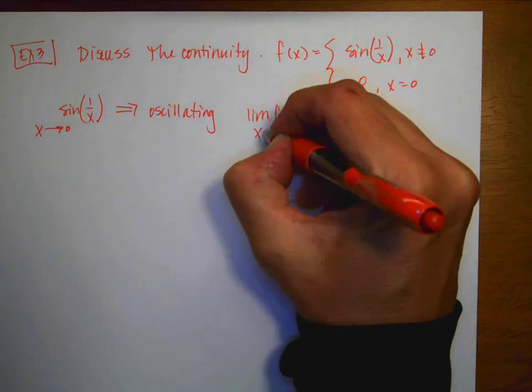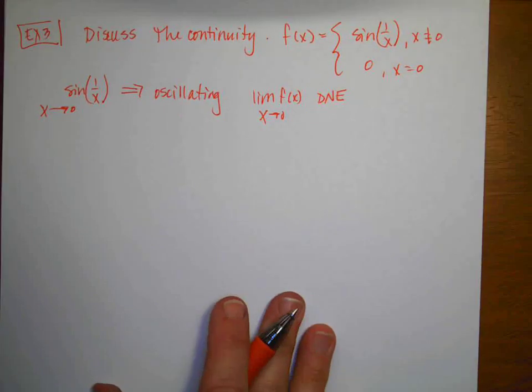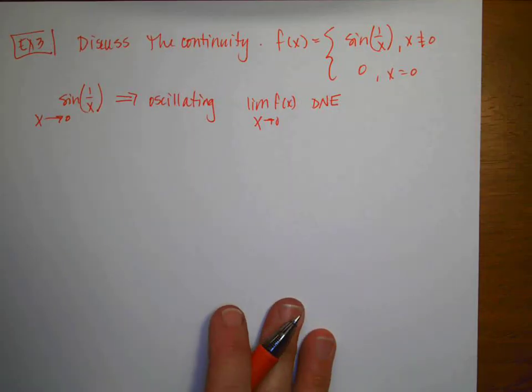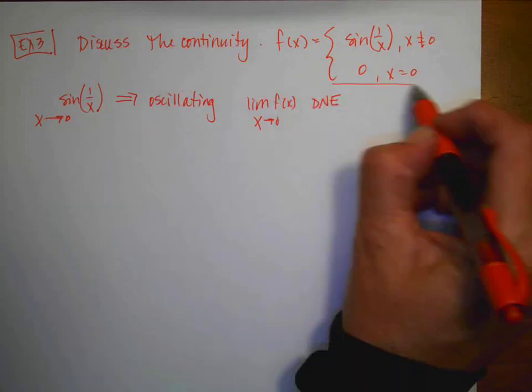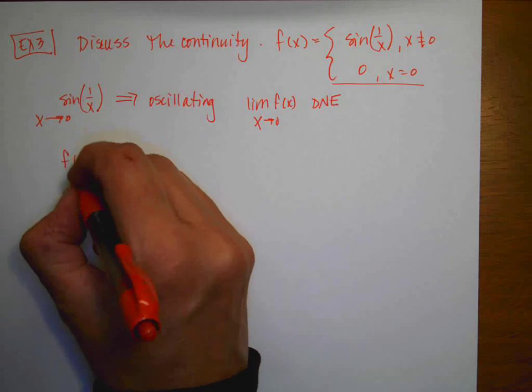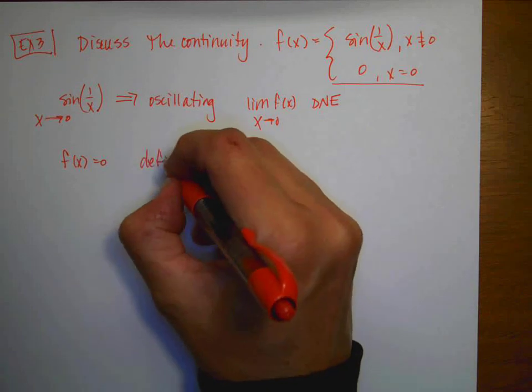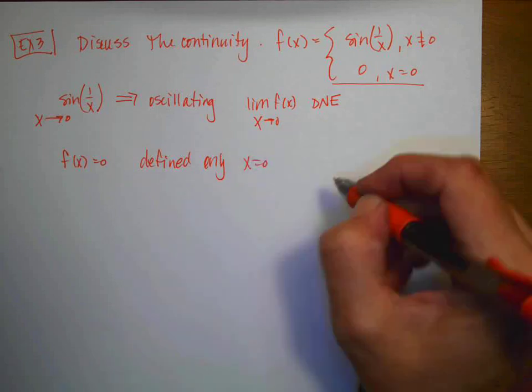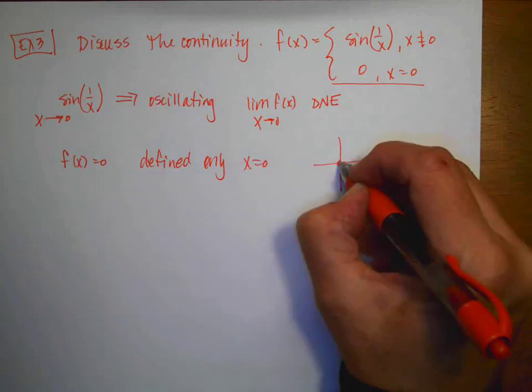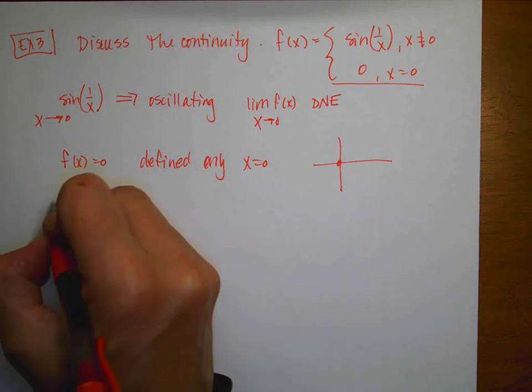And remember that because it's an oscillating function, the limit of the function as x approaches 0 does not exist. And remember, a definition of continuity is that the limit of the function has to exist. And then for the second piece down here, it's just the function f(x) = 0. So it's going to be your x-axis.